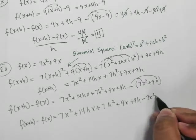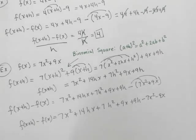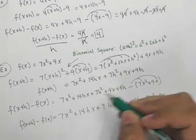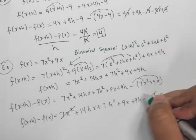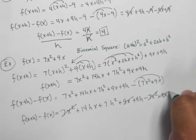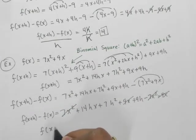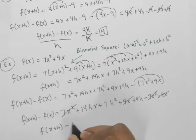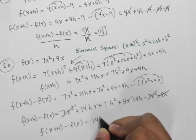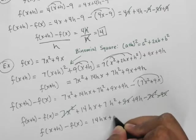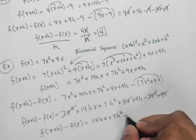minus 7x square minus 9x. Now let me see if I can't cancel anything out. So I see 7x square and minus 7x square, and I see 9x and minus 9x. So this leaves my difference to be f of x plus h minus f of x equals 14hx plus 7h squared plus 9h.